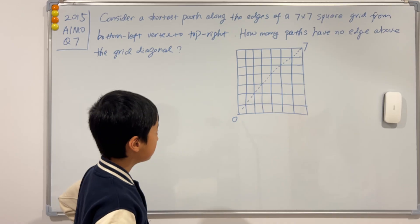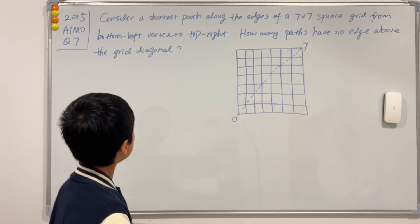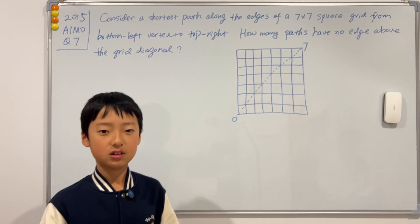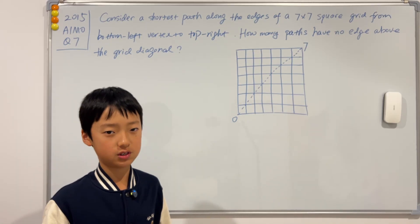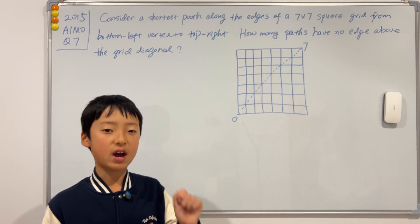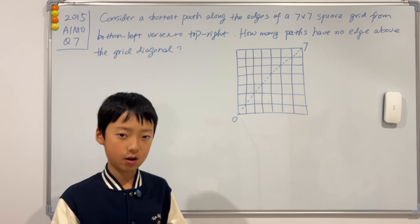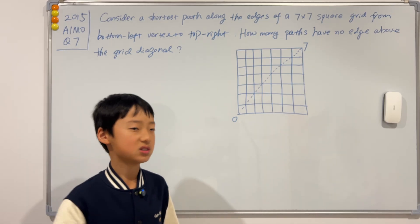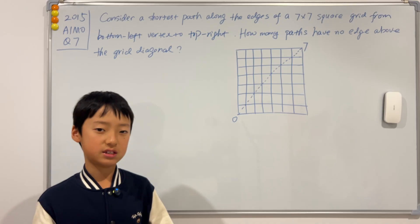The first thing I'm going to address is what does it mean by shortest path? Shortest path means that you can't go backwards. In our case, we can only go right and up, because if we go left or down, we're going backwards. So we're only going right and up.